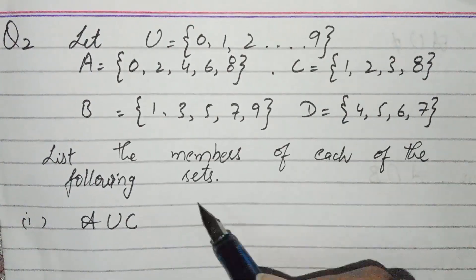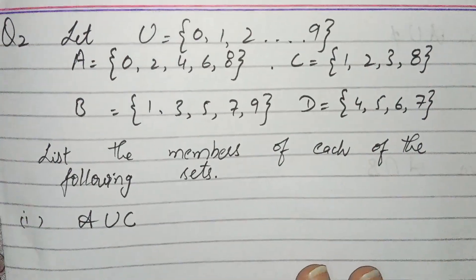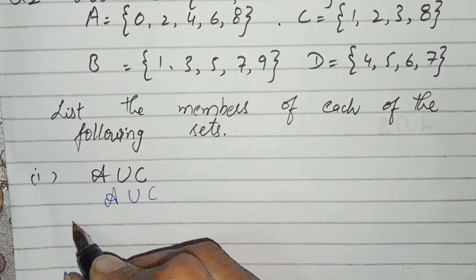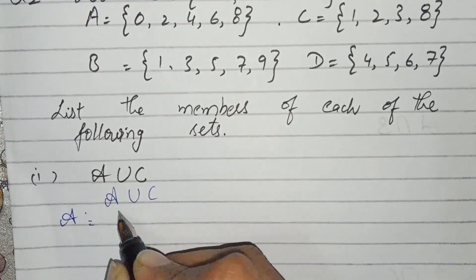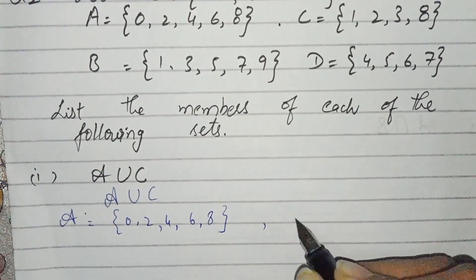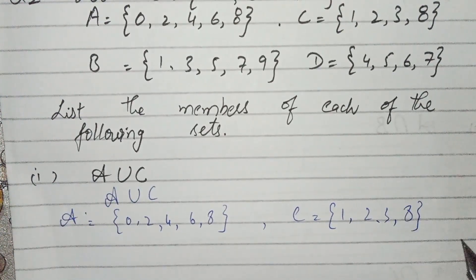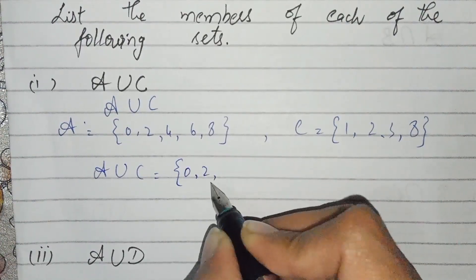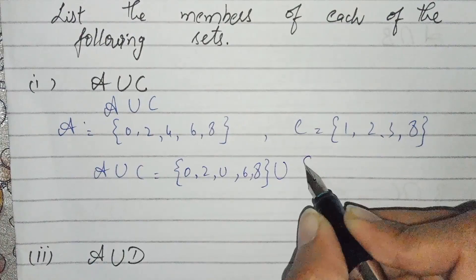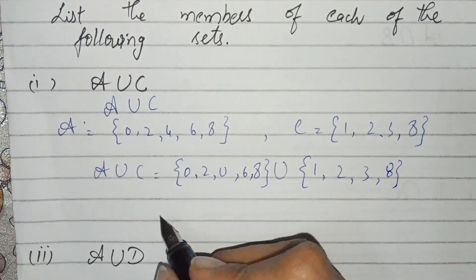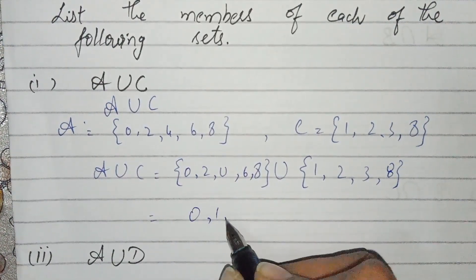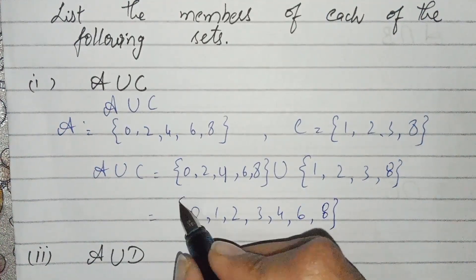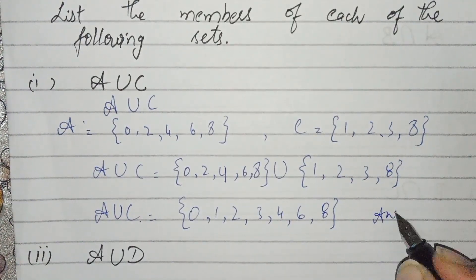Question number two: let A, B, C, and D be given to us. List the members of each of the following sets. Part number one: find A union C. Union means to combine together. A is {0,2,4,6,8} and C is {1,2,3,8}. A union C gives us {0,1,2,3,4,6,8}.